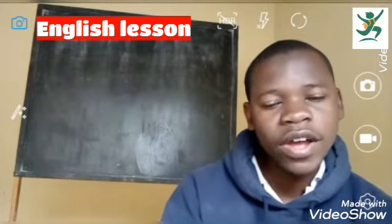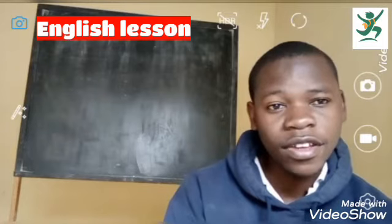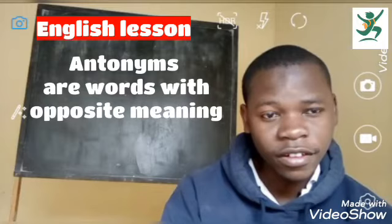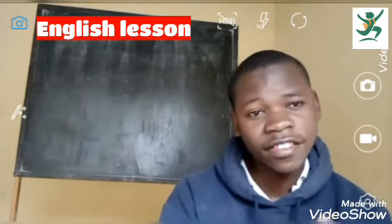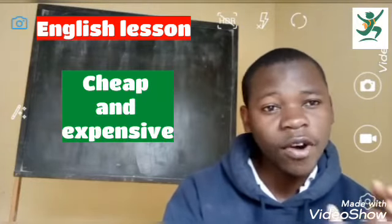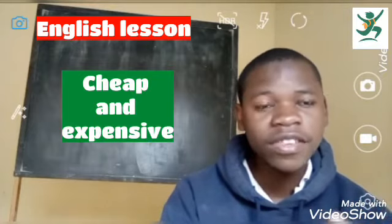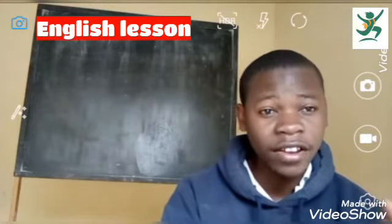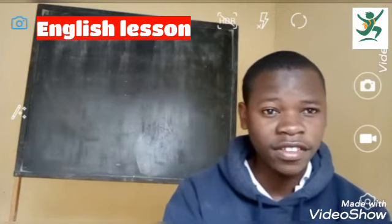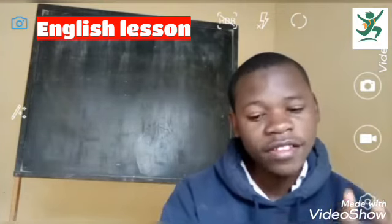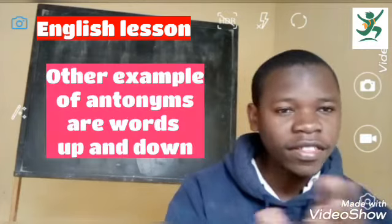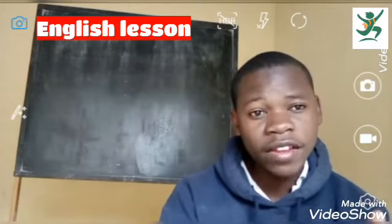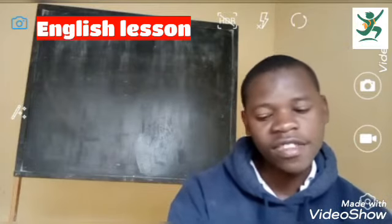Coming to those words now that are called antonyms — antonyms are words that are opposite in meaning. We have words like cheap and expensive; the opposite of the word cheap is expensive, so these two words are called antonyms. We also have words like up and down; the opposite of up is down, so these two words are called antonyms.